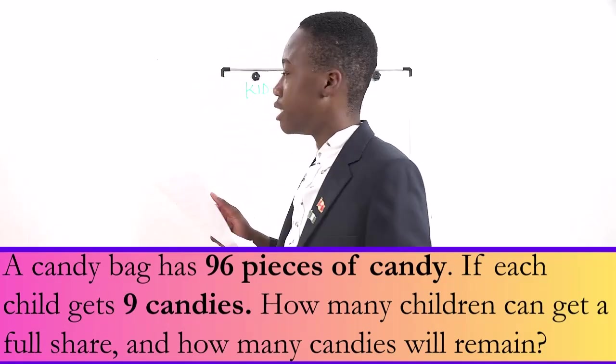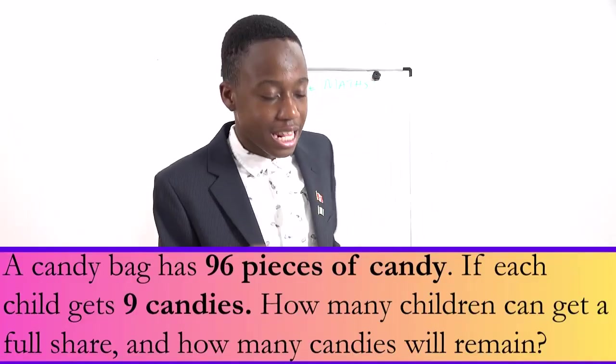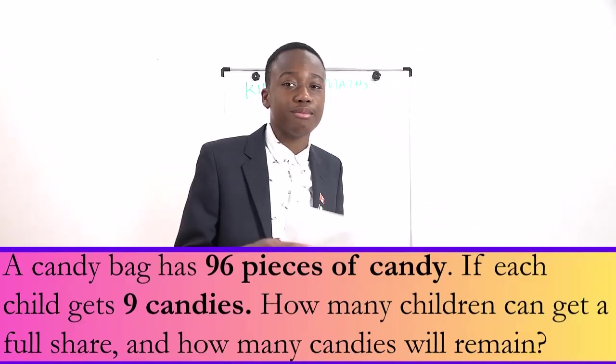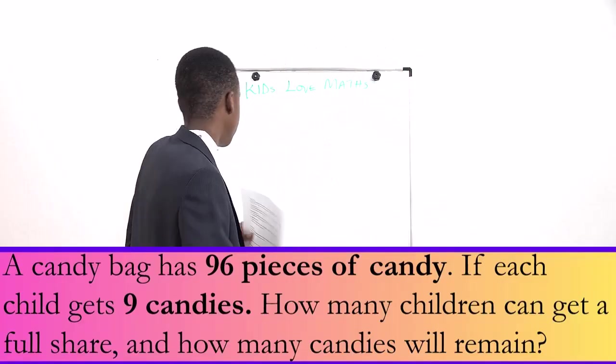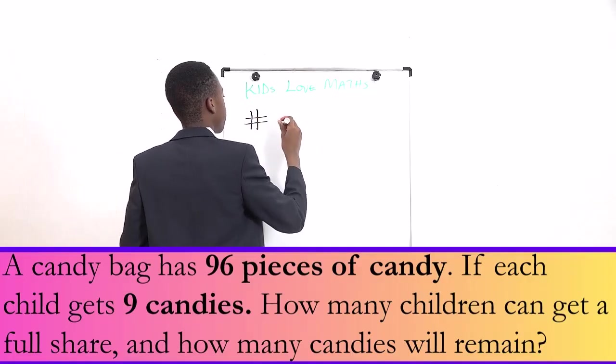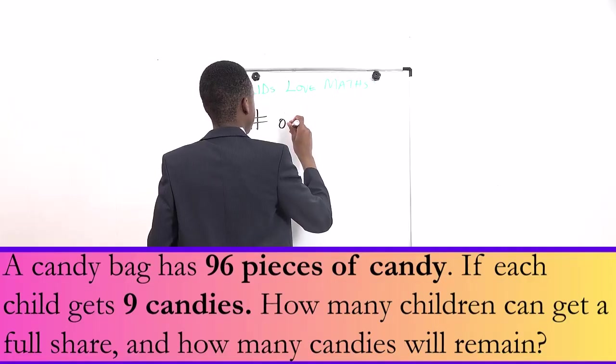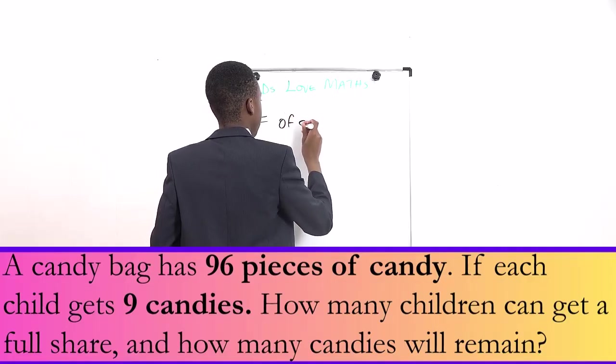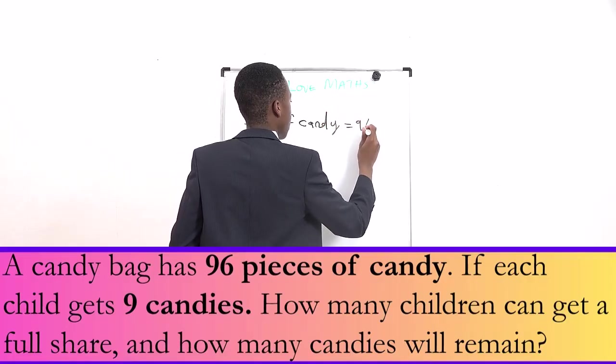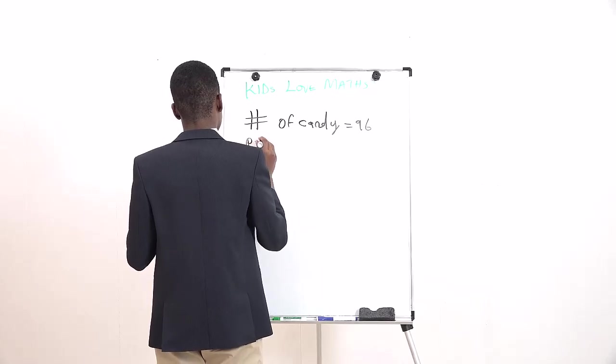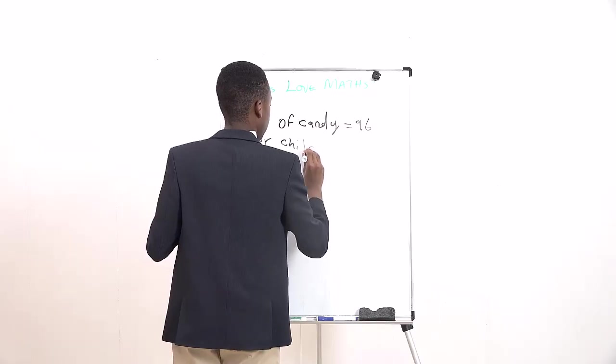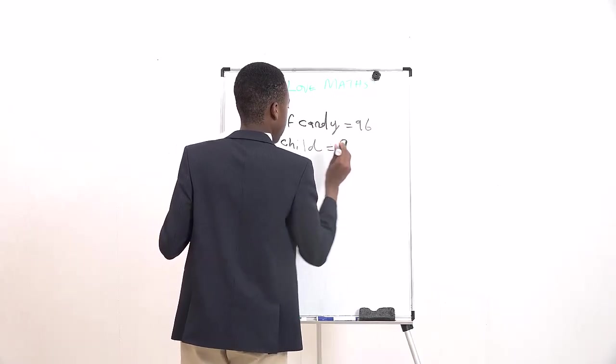So it said that we have 96 pieces of candy in a candy bag. Number of pieces of candy is 96, and per child, let's say, gets 9 candies. Candy you can just never forget.